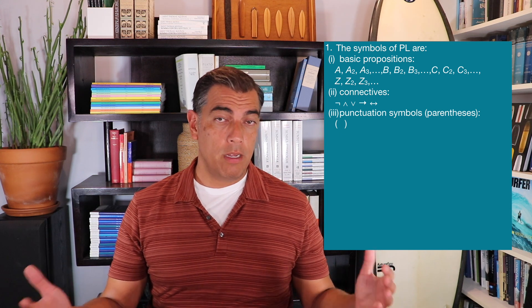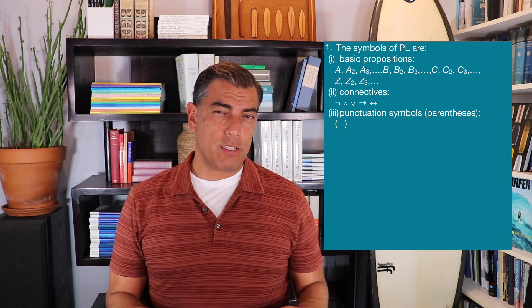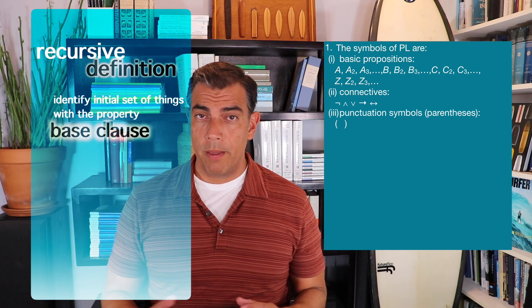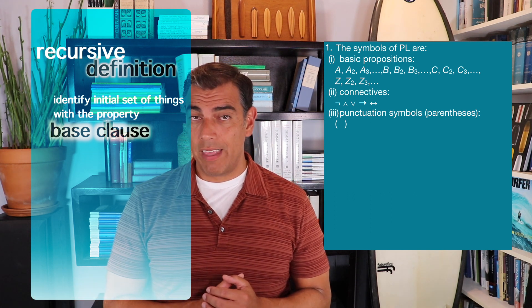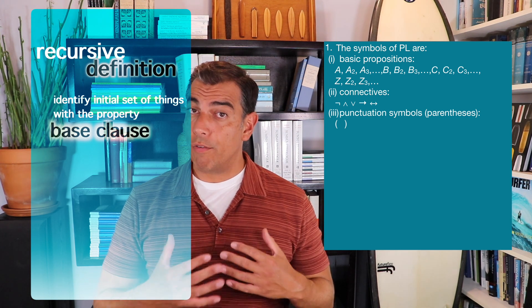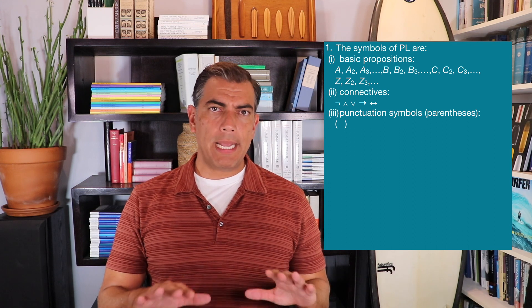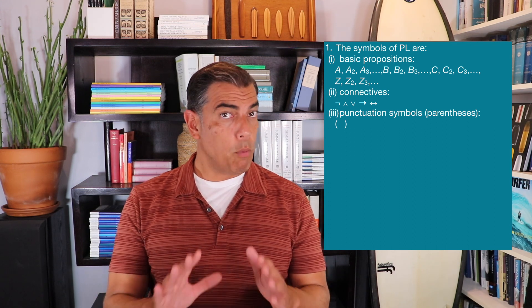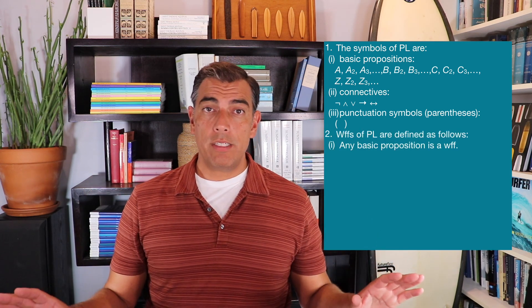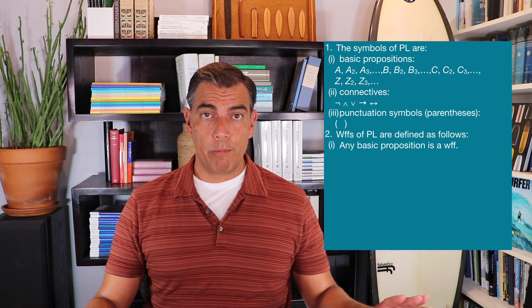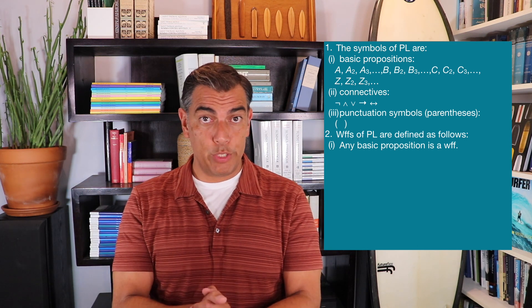Recursive definitions always start with some base clause, also called an initial rule. This identifies or possibly generates a set of things that have the property you're interested in. For us, we're interested in well-formed formulas, and I know I want to count those basic propositions as well-formed formulas — I want to be able to say that A by itself is a well-formed formula. So our initial rule: any basic proposition is a well-formed formula.